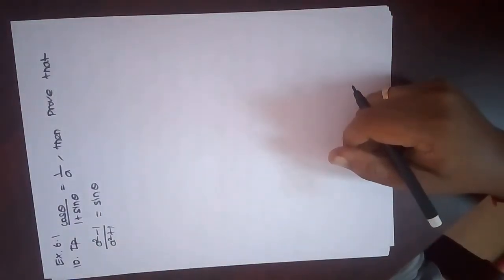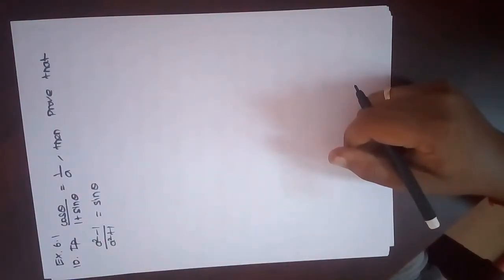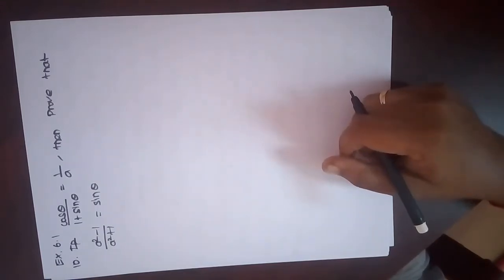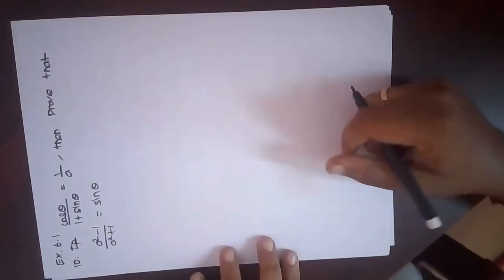I can see the problem. I need to prove that (a² - 1)/(a² + 1) equals sin θ. Okay, let's work through the proof.